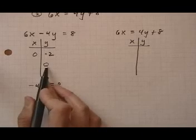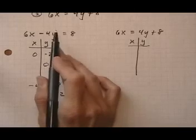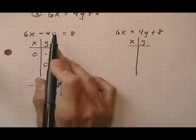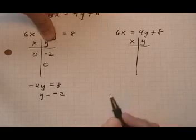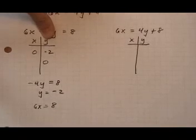Let's do the same thing and put y equals 0 in and find the x-intercept. If we put in y equals 0 to this equation, this term goes away. It multiplies out to 0, so we'd be left with 6x equals 8.